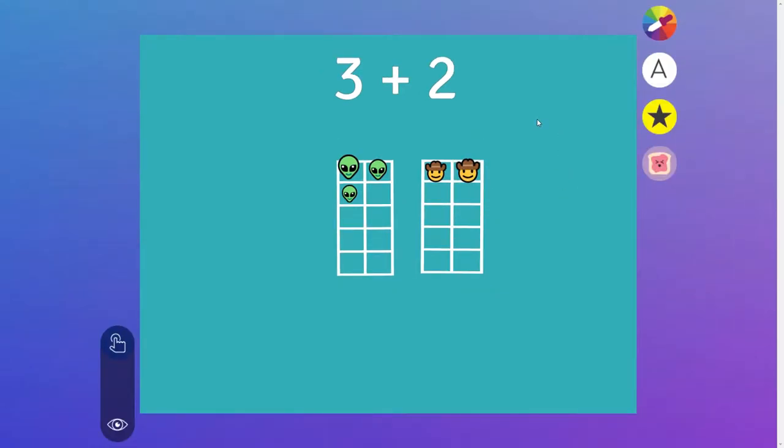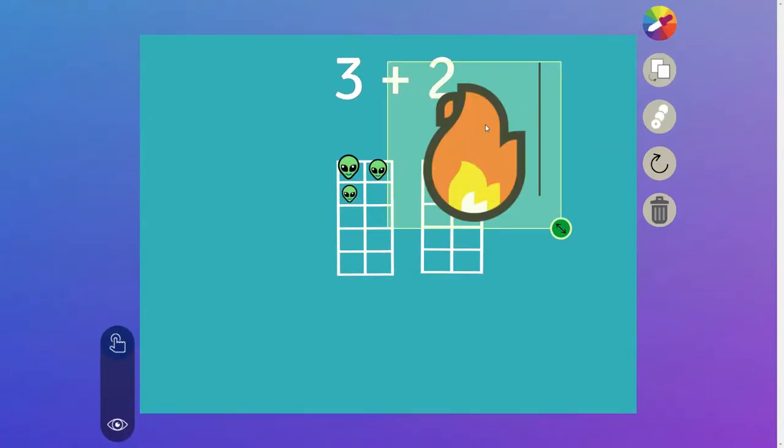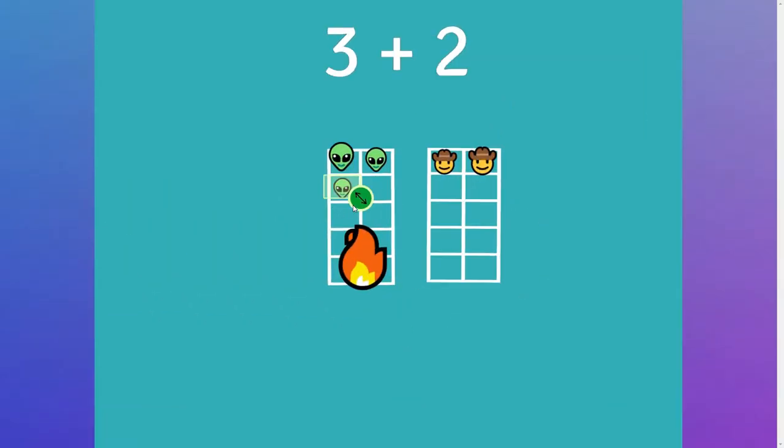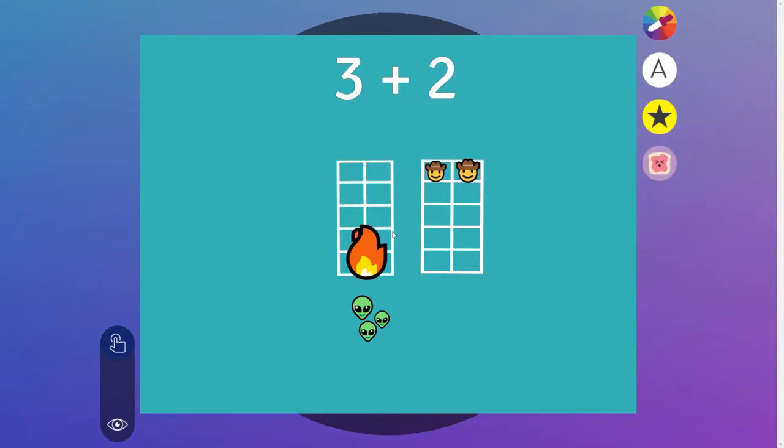After our emojis have been living comfortably in their buildings for a little while, something bad happens. One of the buildings catches on fire. In this case, we need to move the aliens out of their building before it burns down and place them inside the other building safely with the cowboys.